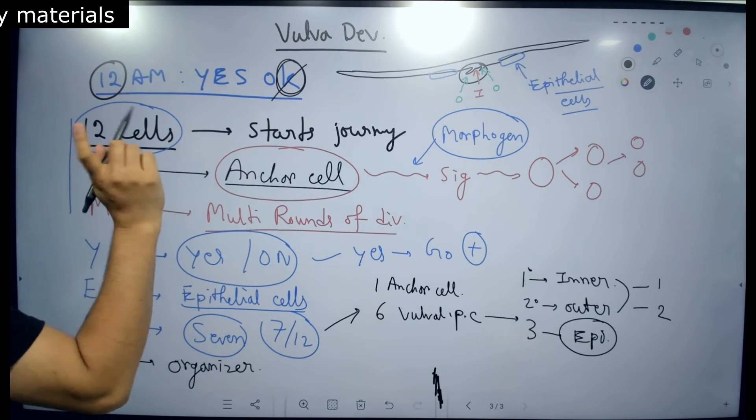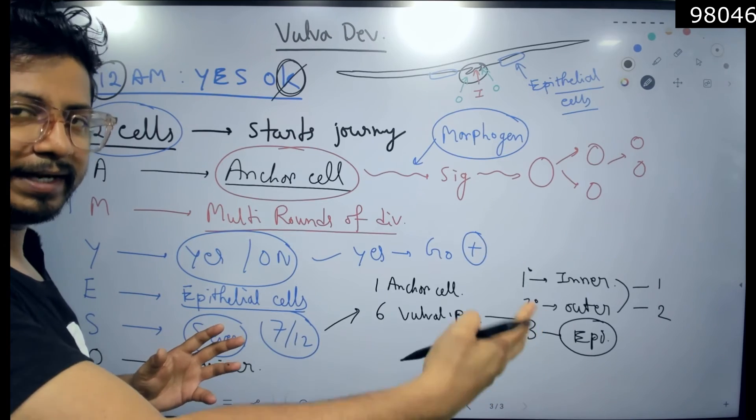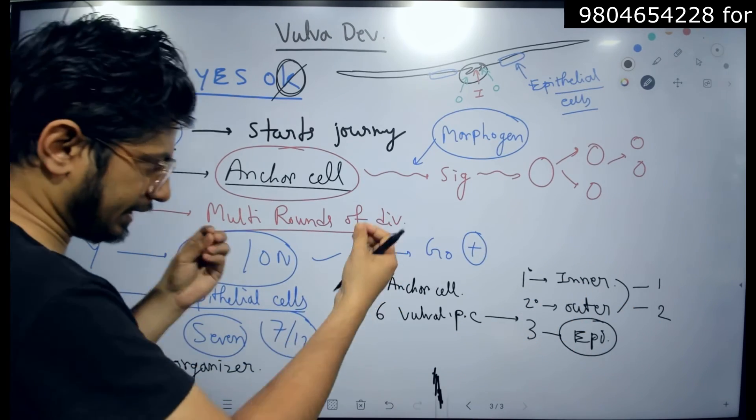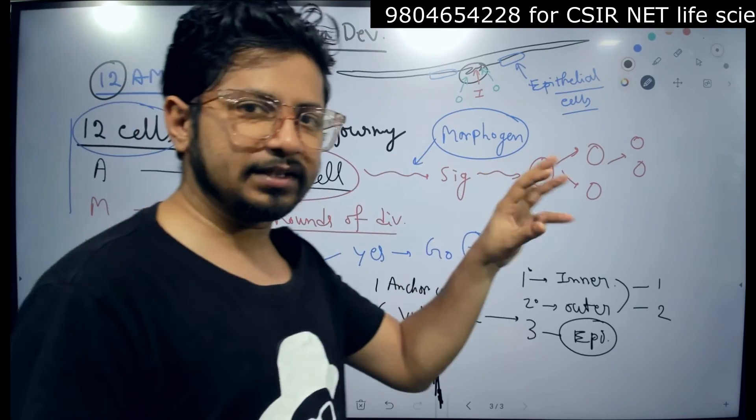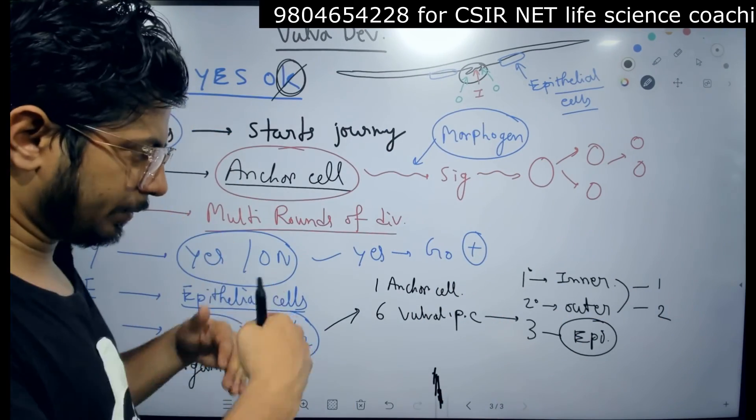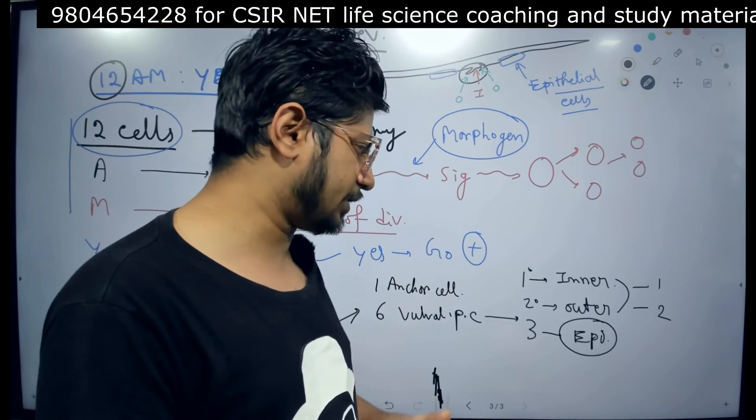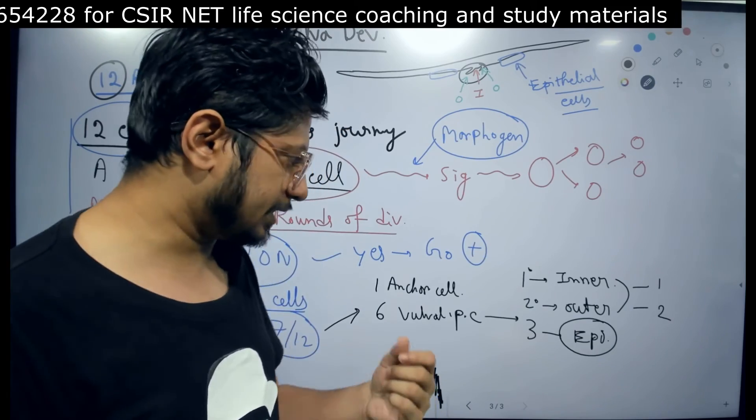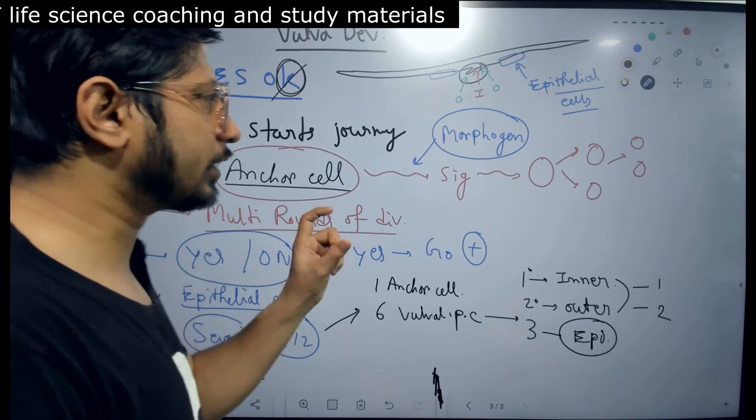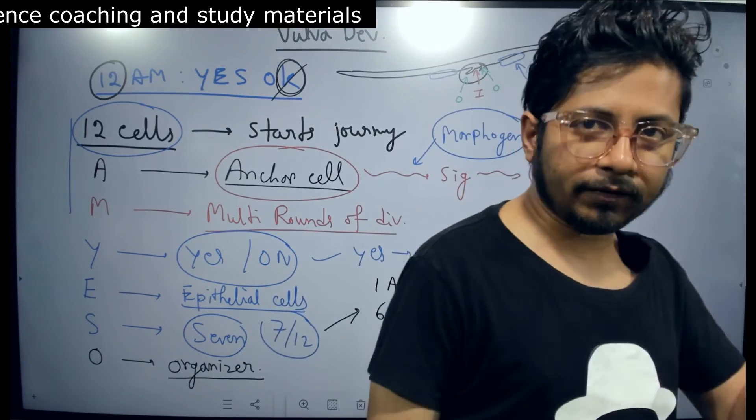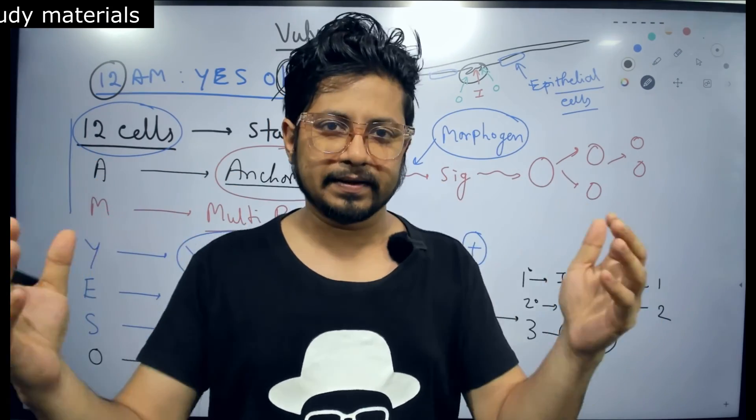12am yes OK. So 12 cells starts the journey, A for anchor cell plays a very important role, then M for multi-round cell division due to the signaling, gradient based signaling by morphogen. Then we have Y, yes or no signal yes, then starts the division, no, no start division. E means epithelial cells, part of the vulva structure, and the S is the 7 cells out of 12 involved in the process of vulva development. 1 is the anchor cell, the other one which is present nearest to the anchor cell is the inner vulva structure, the 2 ones are outer vulva structure which is connected to the inner vulva structure cells, then the rest of the 3 out of the 7 forms epithelial cells. And lastly, O is the organizer, the mode of the organizer concept is very important. The release of the morphogen with the morphogenic gradient establishes the fact and the formation of inner vulva, outer vulva, and the epithelial cell structures out there.